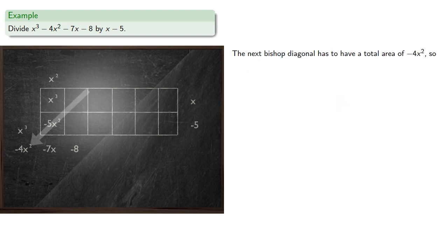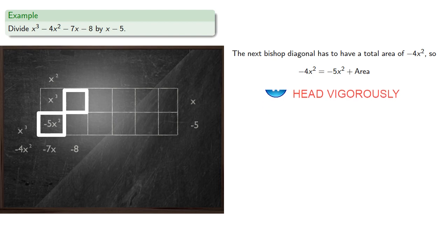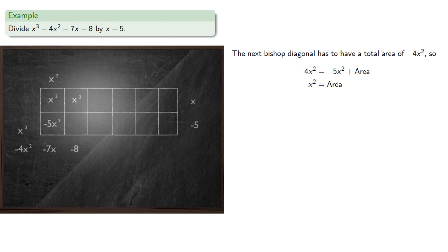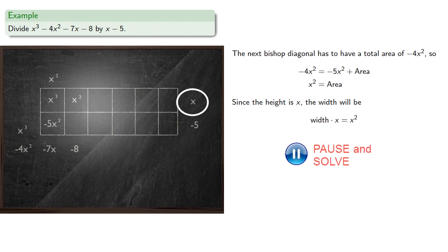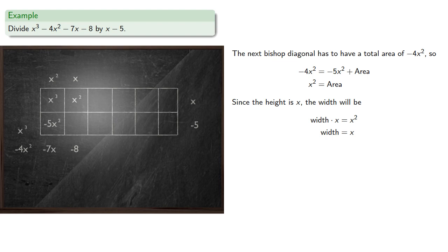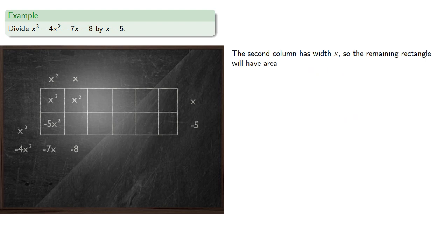The next bishop diagonal has to have a total area of negative 4x squared, so negative 4x squared must be the area of these two rectangles put together. So negative 4x squared equals negative 5x squared plus some unknown area. Solving gives us x squared, and since the height of this rectangle is x, the width will be x as well. But now the second column has width x, so the remaining rectangle's area can be found.